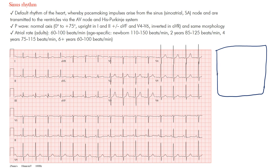Let's quickly review our conduction system. If you're new, you'll notice I use a lot of box diagrams because I think it's best to simplify things. Here's the heart: the right atrium, left atrium, right ventricle, and left ventricle. Our sinus node sits up here, and from it we have internodal pathways that come to an AV node.